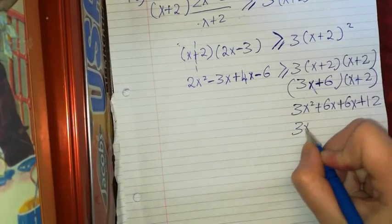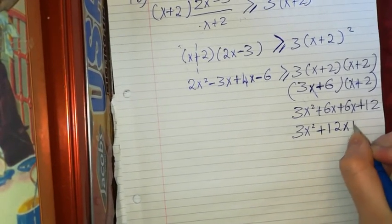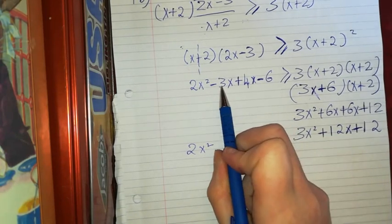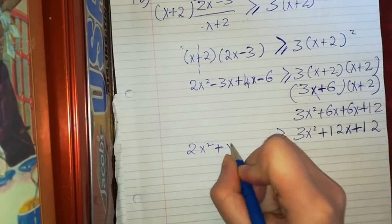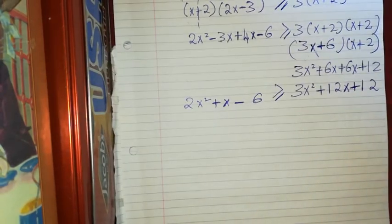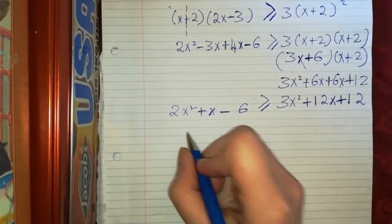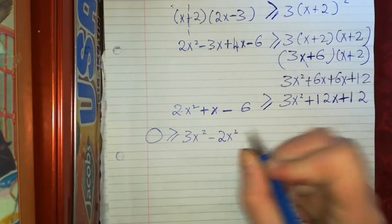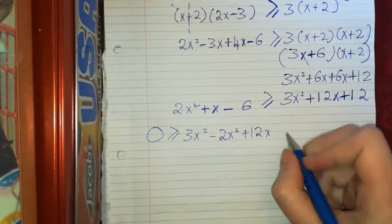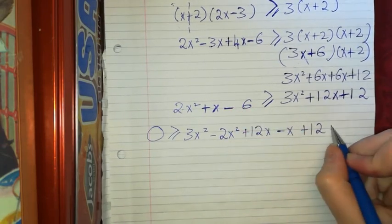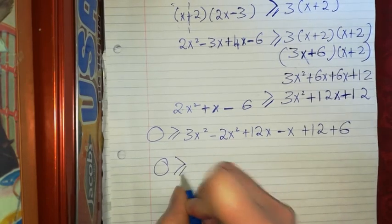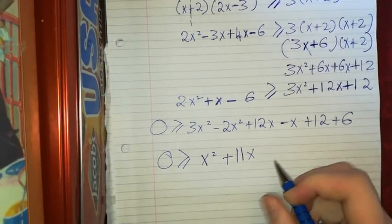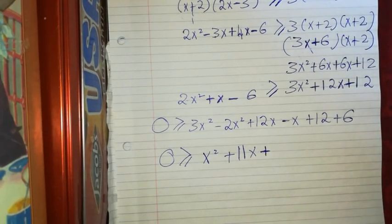So the right side gives me 3x squared plus 12x plus 12. On the left side I have 2x squared, and minus 3x plus 4x gives plus x, minus 6. Now I bring everything to the side that gives a positive x squared, so I get 3x squared minus 2x squared, which is x squared, then 12x minus x is 11x, and 12 plus 6 is 18. So I have x squared plus 11x plus 18 is greater than or equal to 0.